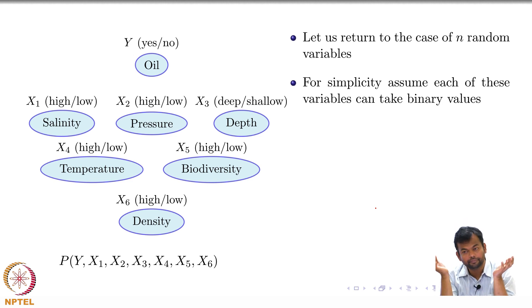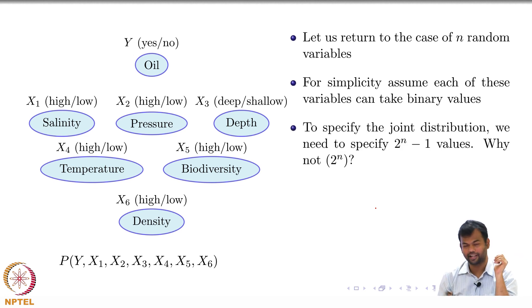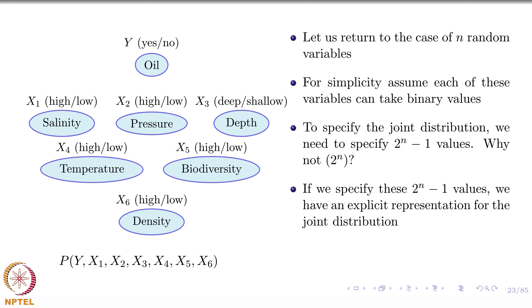2 power n minus 1. Why minus 1? Yeah, it is obvious. If it is not obvious it will come on the next slide. Why not 2 raise to n and why 2 raise to n minus 1? It does not matter, one value is not going to create a lot of difference. So if we specify these 2 raise to n minus 1 values, that is the representation of the joint distribution.